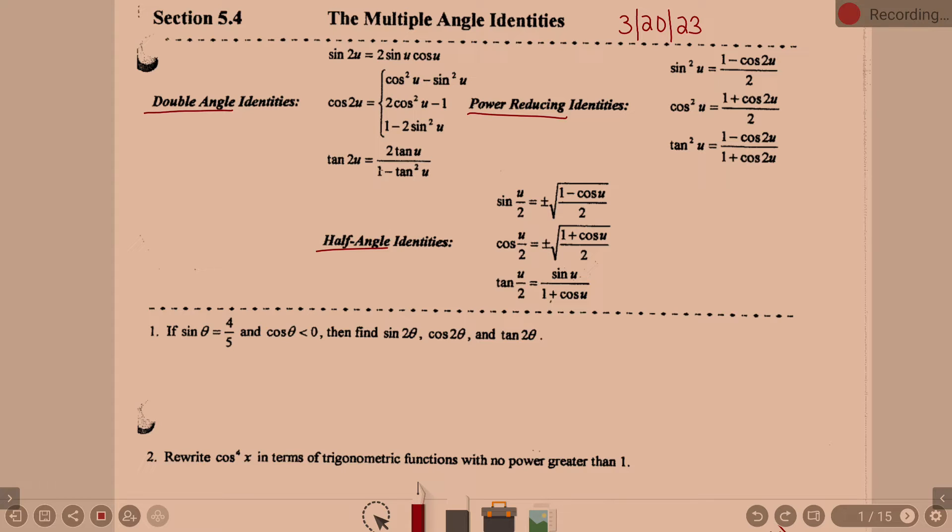Double angle identities, these are called double angle identities because you'll notice they all have a 2 with your variable, whether you call it 2u, 2x, 2theta, they all have a 2 there. And there are other things that are equivalent to these. And you'll notice what the identities are equal to, they do not have 2s with the variables. And so it's how do you get rid of a double angle so you don't have a 2 with the angle.